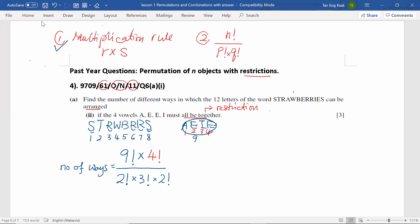Now, this will be the number of ways to arrange this word strawberry where all four vowels are together. And the number of ways is 362,880.